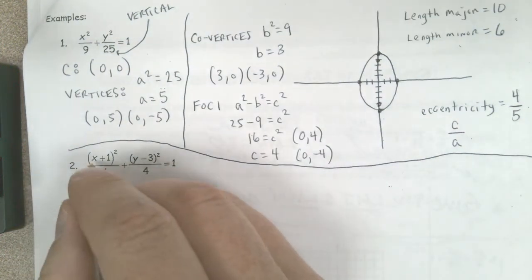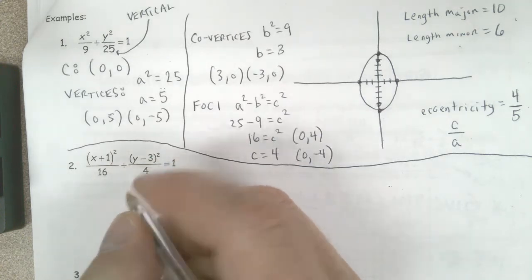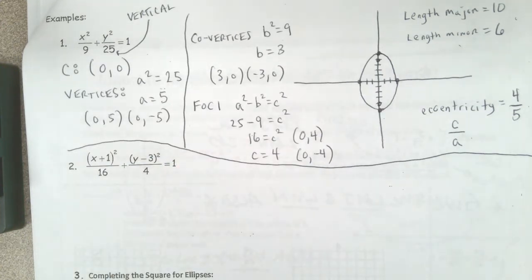Okay, so number 2, x plus 1 squared over 16 plus y minus 3 squared over 4. Just looking at this, can somebody tell us is this going to be a horizontal or a vertical ellipse?